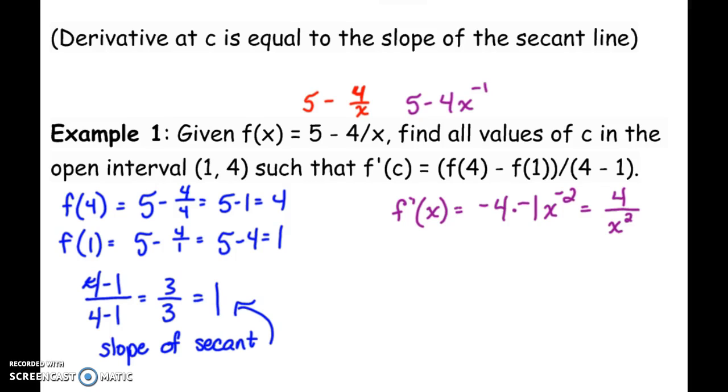Our question is, where does that equal 1? So we set that equal to 1, because that's the slope of our secant line. To solve this, we need to multiply both sides by x squared. So we get x squared equals 4. Take the square root.